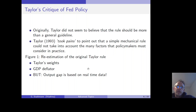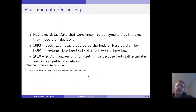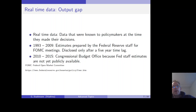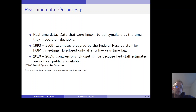Let me clarify the term real-time data. Real-time data is data that were known to policymakers at the time they made their decisions. For the time period 1993 to 2009, Bernanke uses estimates prepared by the Federal Reserve staff for meetings of the board. This information is only disclosed after a five-year time lag, and therefore for the time period 2010 to 2015 this information is not available at all.